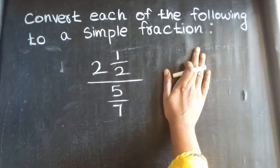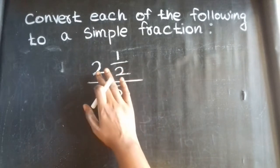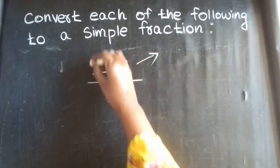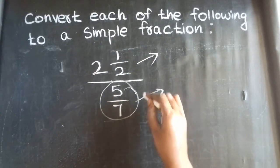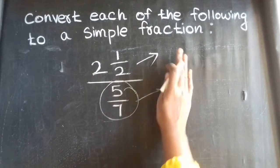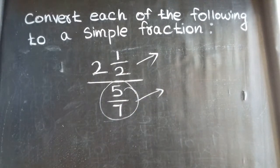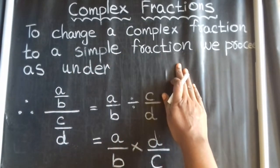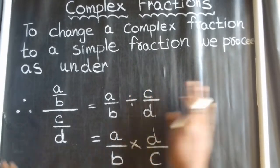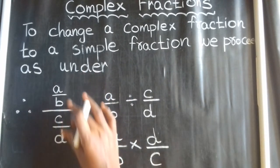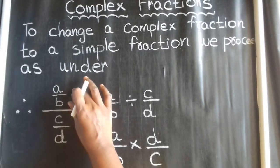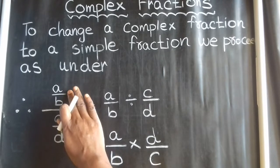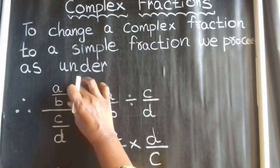Convert each of the following to a simple fraction. First example: 2 and 1/2 divided by 5/7. In the numerator part there is a mixed fraction, and in the denominator part there is a fractional part — so this is a complex fraction. There is a condition: to change a complex fraction to a simple fraction, we proceed as follows. In the numerator part we have a fractional part, and in the denominator part we have a fractional part. In the numerator there is one mixed fraction, that is, convert the improper fraction to a fractional part.